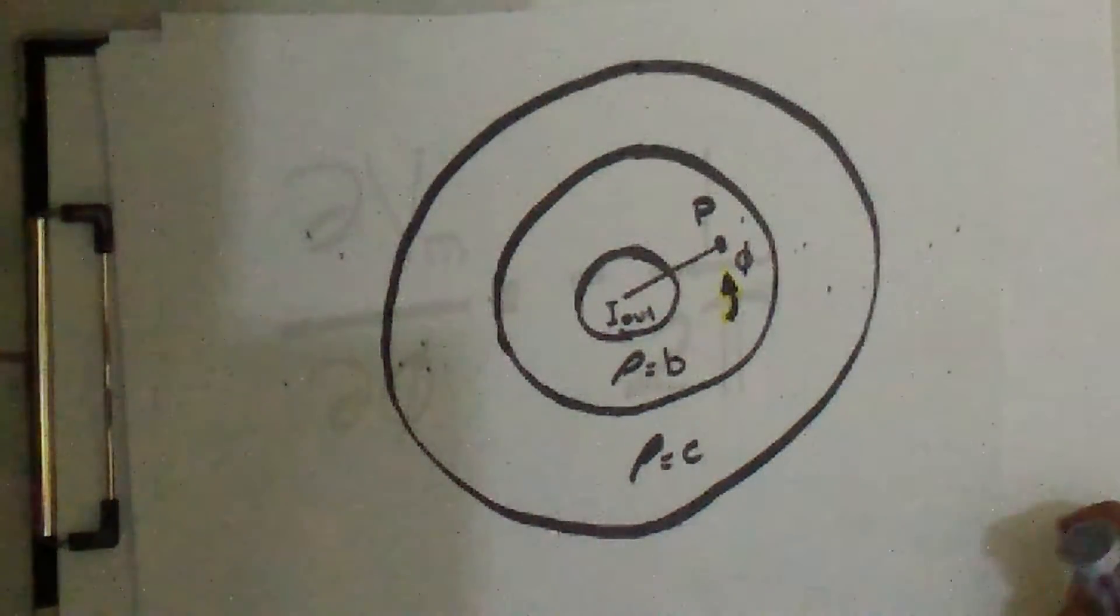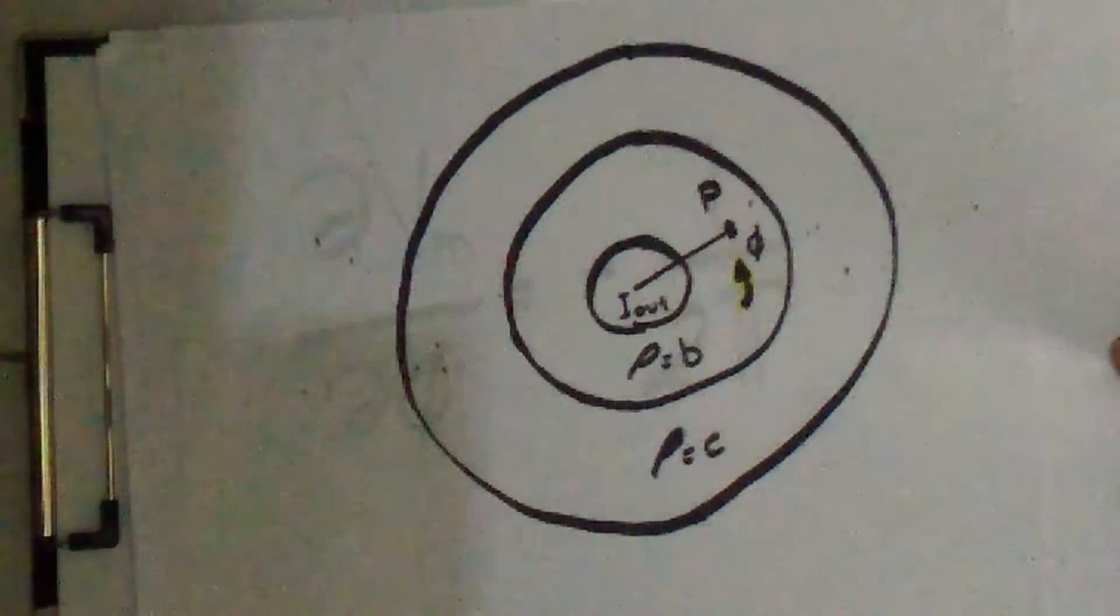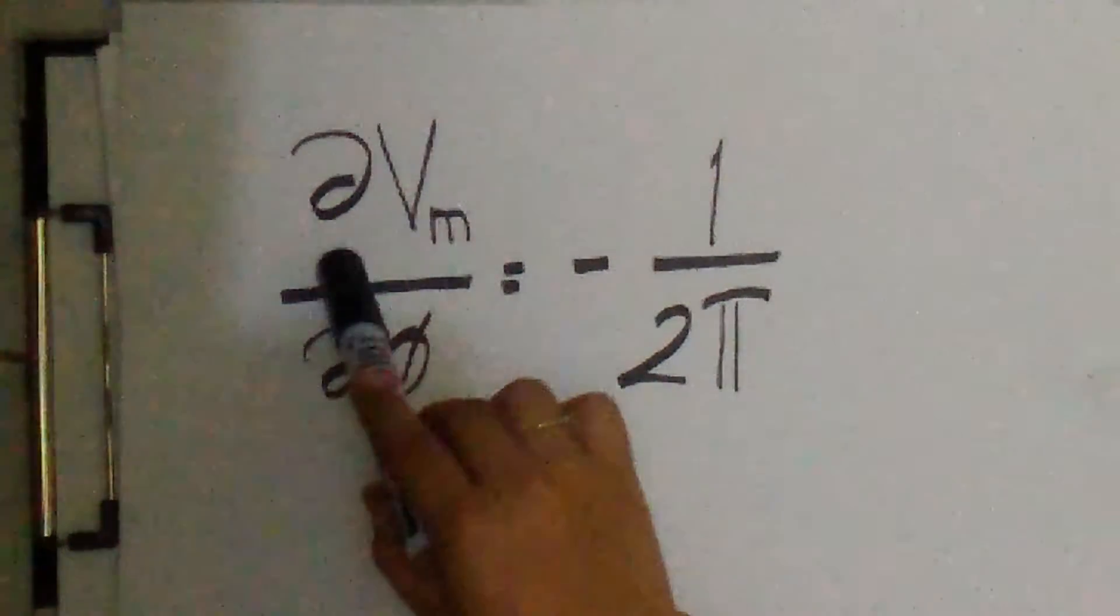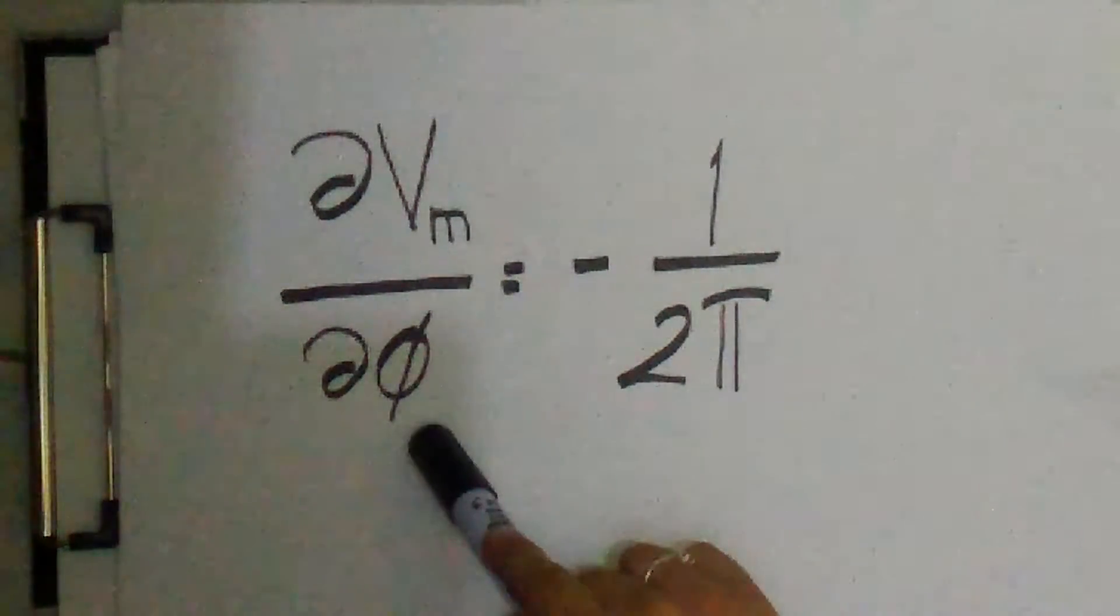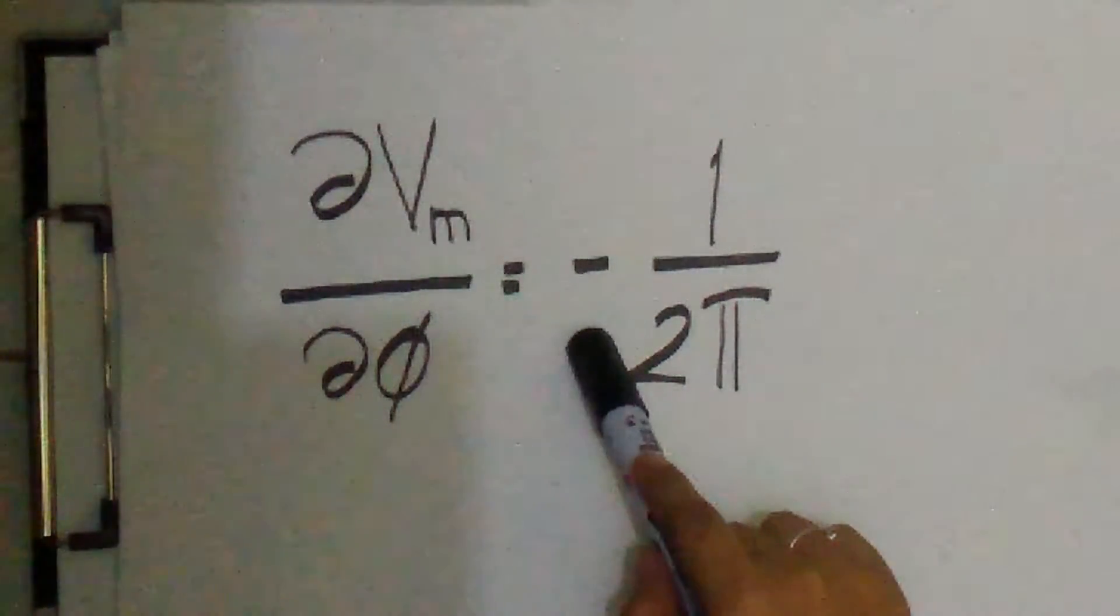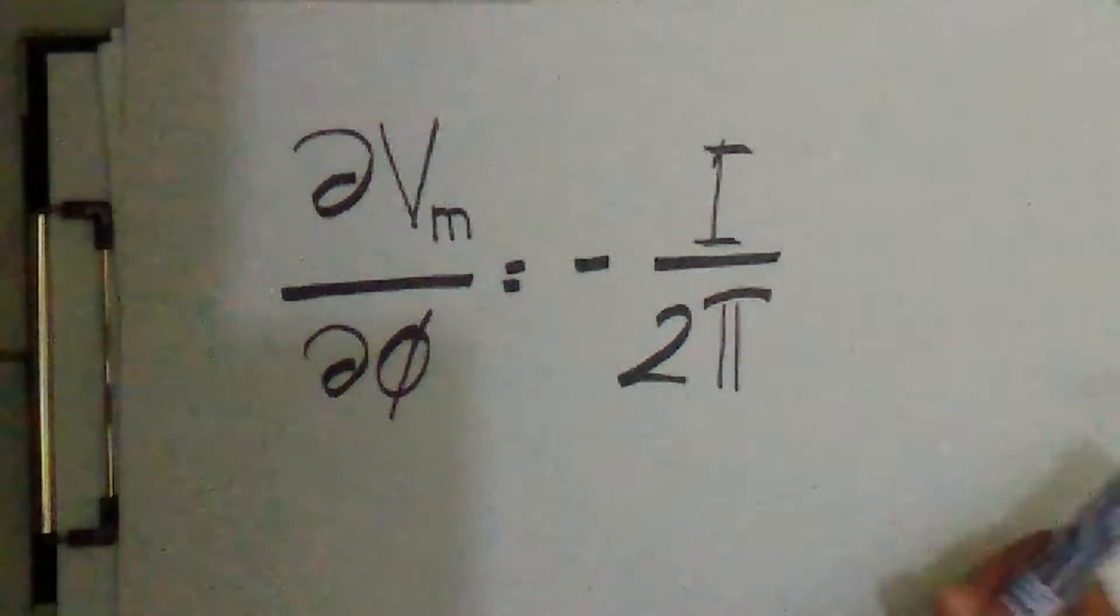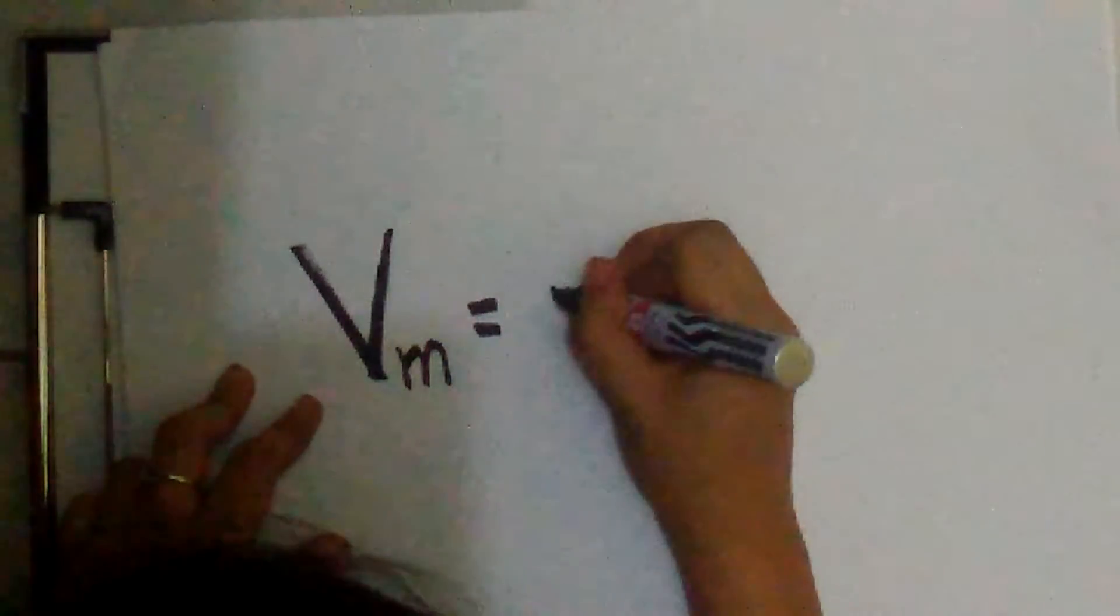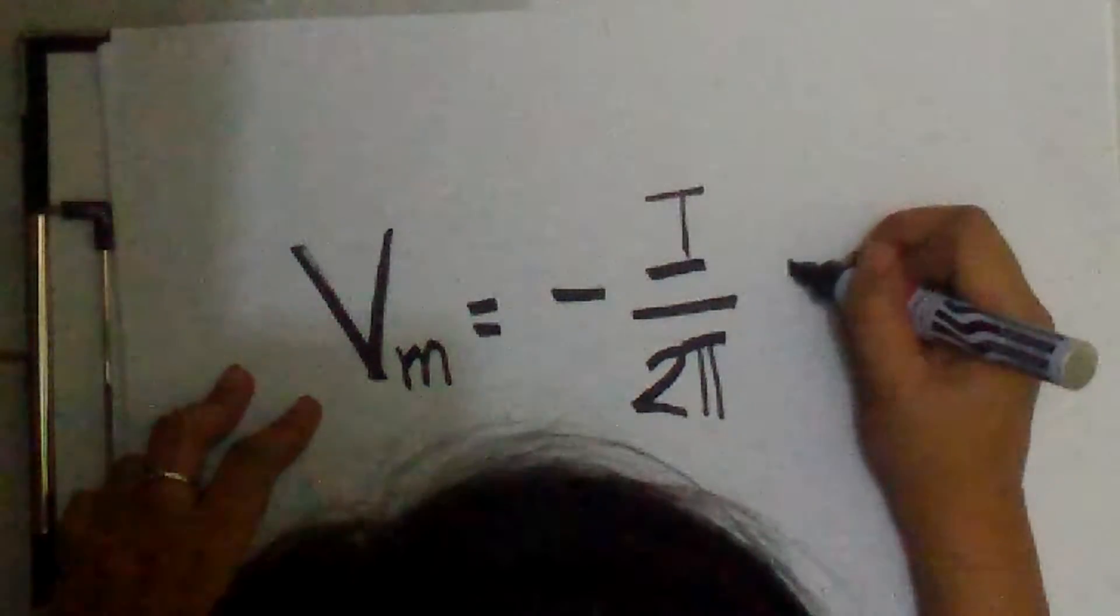Let us find Vm by integrating the appropriate component of the gradient. Vm, partial derivative of Vm over partial derivative of phi is equal to negative I over 2π. So Vm is equal to negative I over 2π times phi.